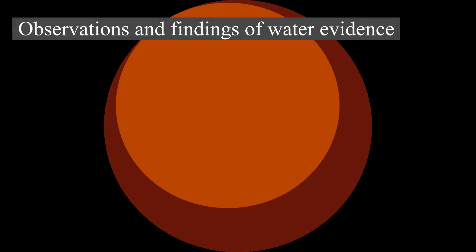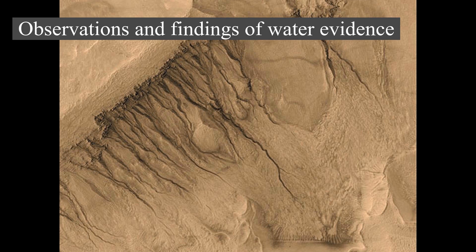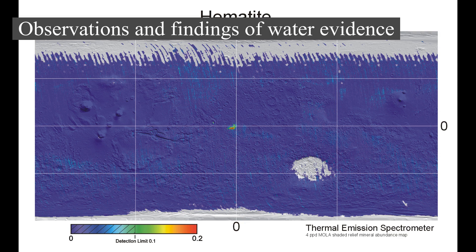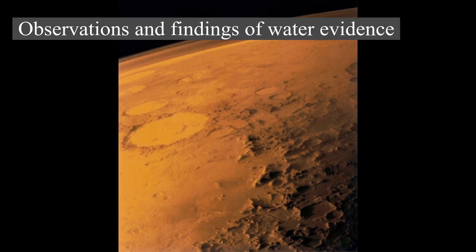In 2004, the Opportunity rover detected the mineral jarosite, which forms only in the presence of acidic water, showing that water once existed on Mars. The Spirit rover found concentrated deposits of silica in 2007, indicating wet conditions in the past. In December 2011, the mineral gypsum, which also forms in the presence of water, was found on the surface by NASA's Mars rover Opportunity. It is estimated that the amount of water in the upper mantle of Mars, represented by hydroxyl ions contained within Martian minerals, is equal to or greater than that of Earth at 5,300 parts per million.